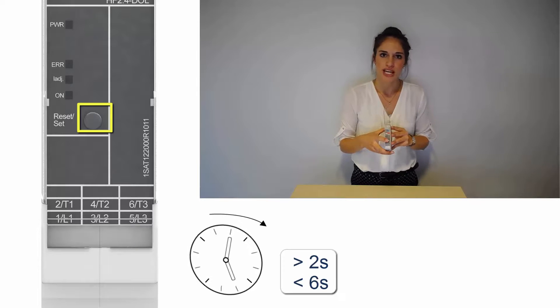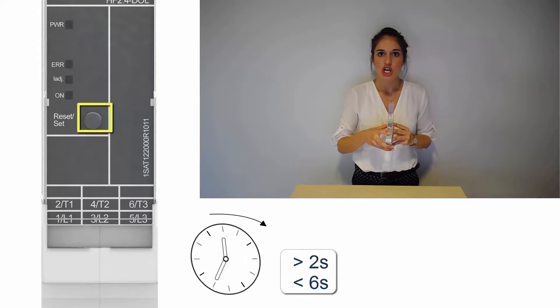Press the reset button for more than 2 seconds and less than 6 seconds to display the set current. The set current will be shown by the LEDs for 3 seconds.